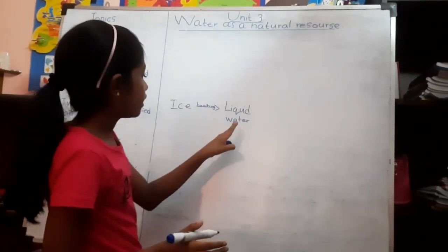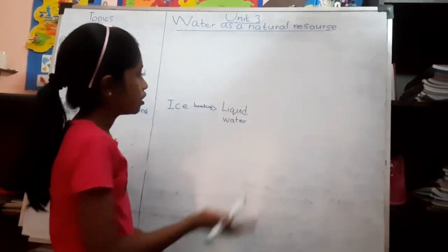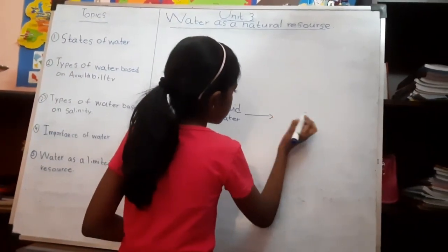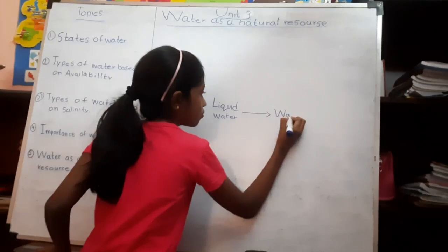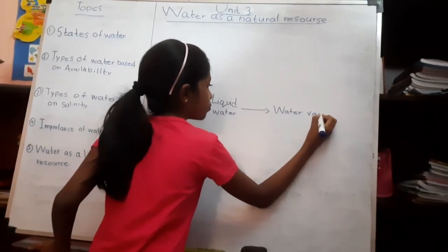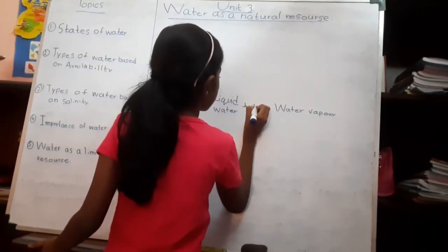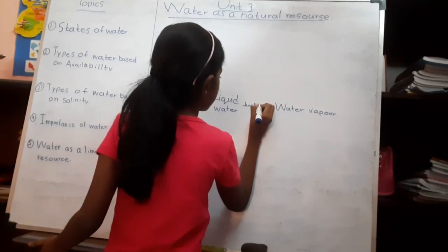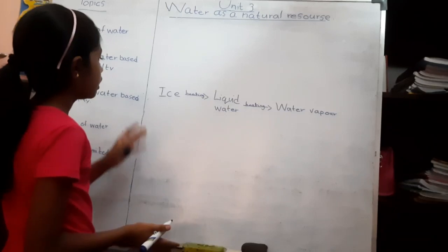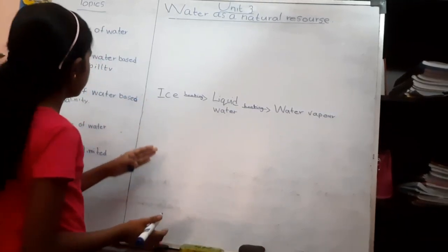When we heat further, the liquid water turns into water vapor. So we can identify the ice as solid state of water.